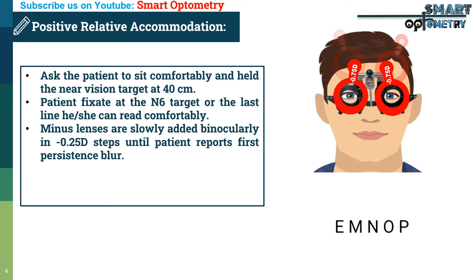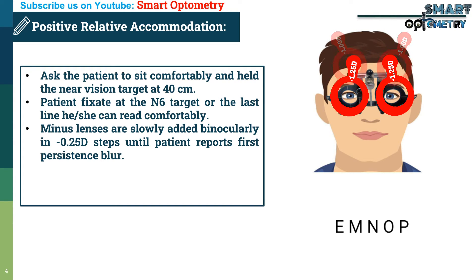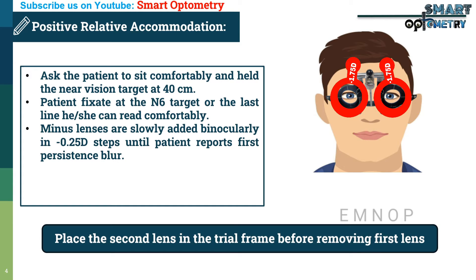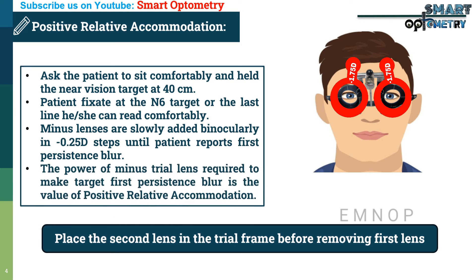Continuing to add: minus 0.75 — still clear; minus 1.00 — still clear; minus 1.25 — still clear; minus 1.50 — still clear. Finally, with minus 1.75, the patient reports persistent blur. Remember to place the second lens in the trial frame before removing the first lens. The power of the minus trial lens required to produce first persistent blur is the value of positive relative accommodation.